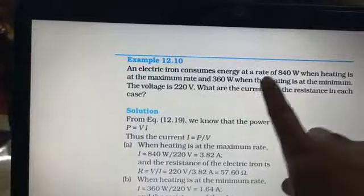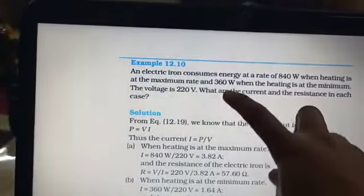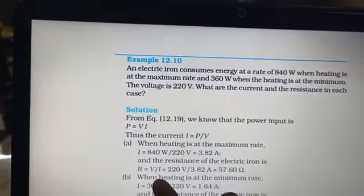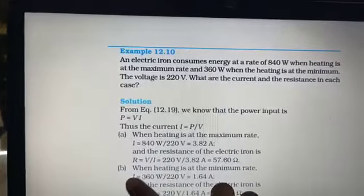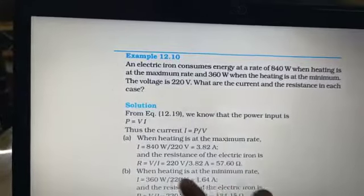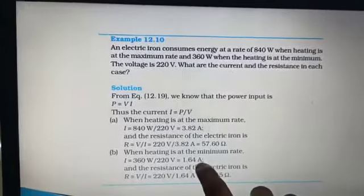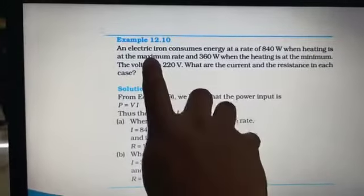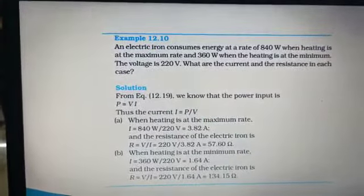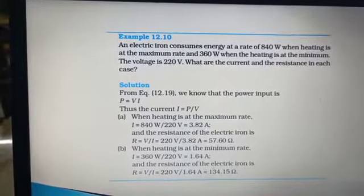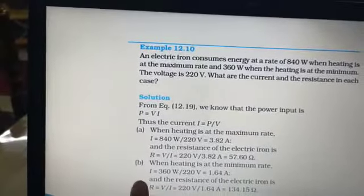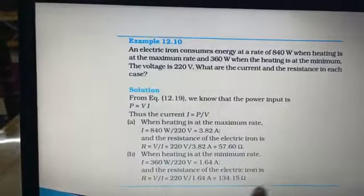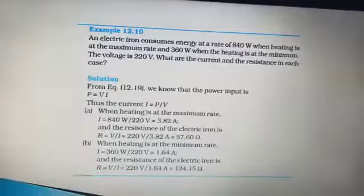Now, moving to case 2. Case 2 is the heating is minimum at 360 watts. Power is 360, voltage is 220. 360 power divided by voltage equals current, 360 divided by 220 equals I. We are getting 1.64 ampere. Then using this 1.64 ampere I and using voltage 220, V by I equals R. Using Ohm's law, 220 divided by 1.64 equals 134.15 ohms.